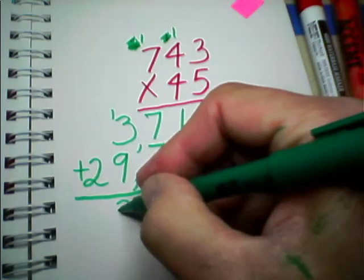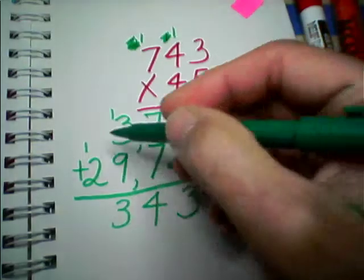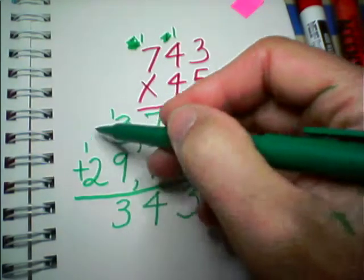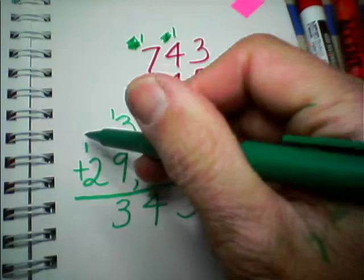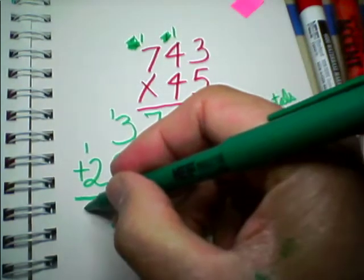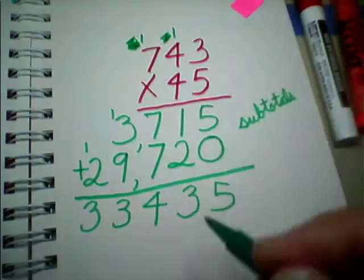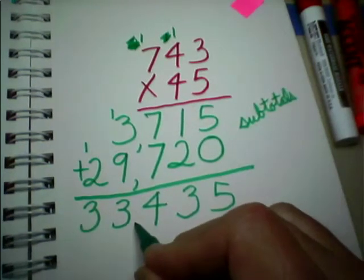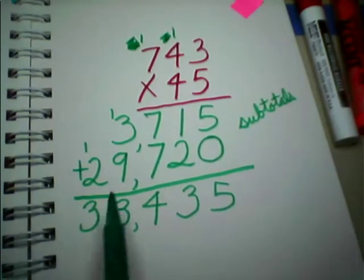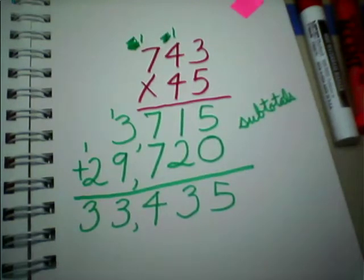We write down the 3. We carry the 1. We add it right into the 2. There's nothing over here because there's nothing there. So, 1 plus 2 is 3. And then we put the comma in the correct place, and we take a look at it. 29,000 plus 3,000 is probably going to be 32,000 plus all this other stuff here. 33,435. That looks like a pretty reasonable answer to me, and that's how you do double-digit multiplication.